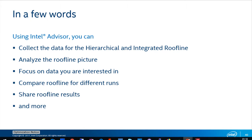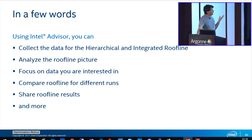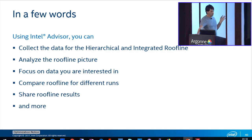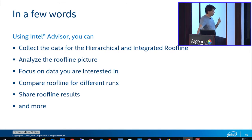To conclude: you can use a hierarchical cache-aware roofline or integrated roofline — you need slightly different collection options for each. You can analyze the roofline picture, choose the data you're interested in, compare rooflines to measure progress during optimization, and share results.